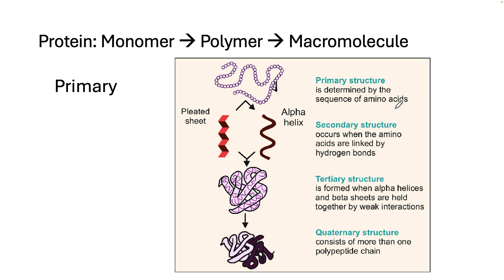The first level is called the primary structure. Think of the amino acids as being beads on a string. The primary structure is just the order of amino acids on that string. Remember that there are 20 amino acids, so which order they go in is the primary structure.